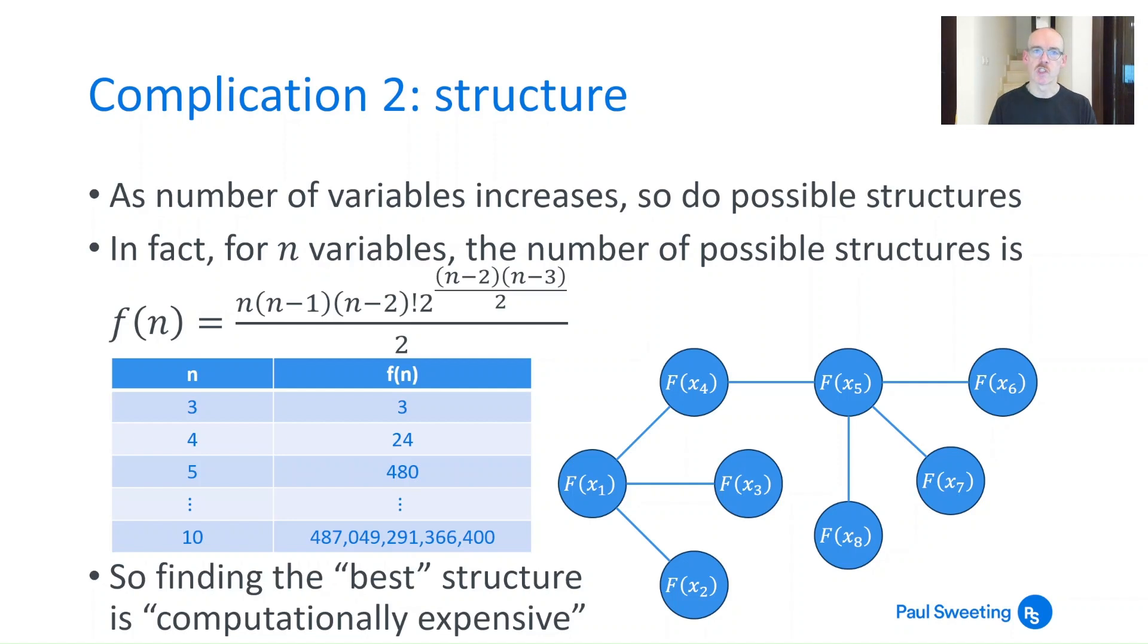The second complication is structure. As the number of variables increases so do the possible structures, or the number of possible structures. The one we saw just before had three variables and as you can imagine if you've got three in a row the middle one can be one, two or three. So if n equals three in terms of the number of variables, the number of possible structures you could have is three.